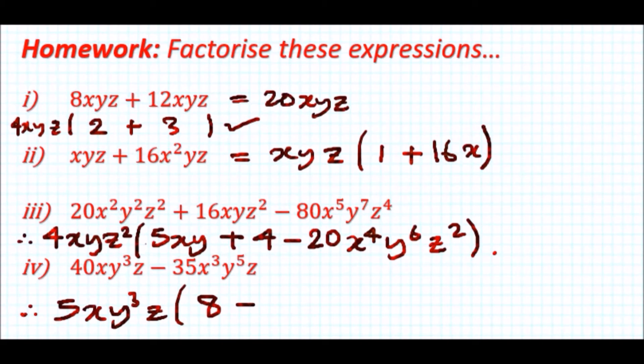To make 35 you need multiply by 7. To get x³ you need two more x's, to get y⁵ you need two more y's, and to get z we have the right amount. So that's it.